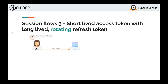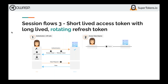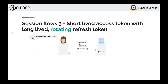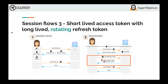This brings us to rotating refresh tokens. The user authenticates, the API returns an access and a refresh token, and the access token is used for API calls. When the access token expires, the browser uses the refresh token to get back a new access token and a new refresh token — this is the key difference from flow two. When a refresh token is used, both a new access token and a new refresh token are returned. This allows us to detect session hijacking: when the attacker uses a revoked refresh token R0, the API can detect that a revoked token is being used and revoke the entire session.